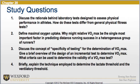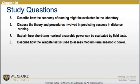This concludes the content for Chapter 20. Next are a series of study questions to test your knowledge of the chapter: 1. Discuss the rationale behind laboratory testing designed to assess physical performance in athletes — how do these tests differ from general physical fitness tests? 2. Define maximal oxygen uptake — why might relative VO2max be the single most important factor in predicting distance running success in a heterogeneous group of runners? 3. Discuss the concept of specificity of testing for the determination of VO2max. 4. Give a brief overview of the design of an incremental test to determine VO2max. 5. What criteria can be used to determine the validity of a VO2max test? 6. Briefly explain the technique employed to determine the lactate threshold and the ventilatory threshold.